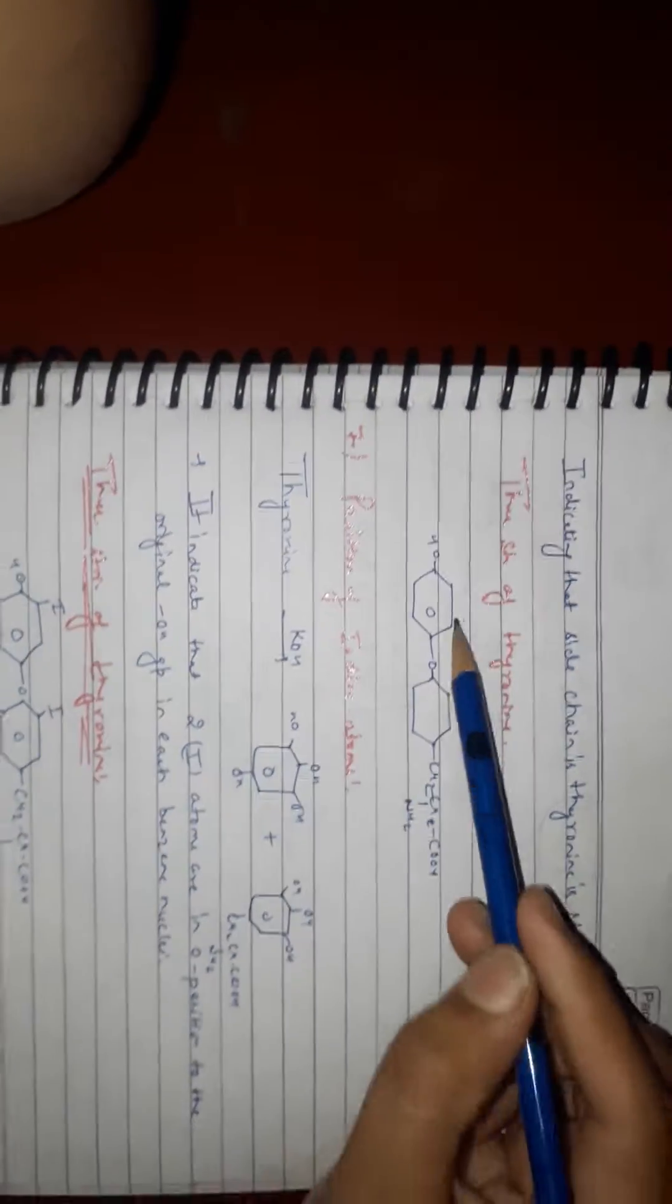On boiling with HI, thyronine gives thyroid sign, which indicates our side chain in thyronine is in straight structure. Structure of thyronine is like that: there is no presence of hydroxyl group here.